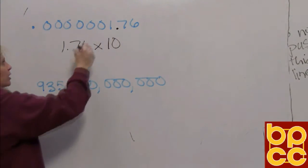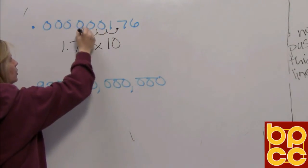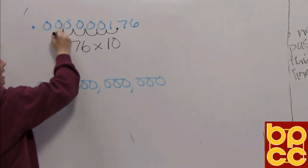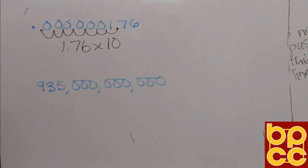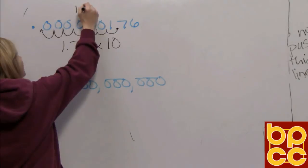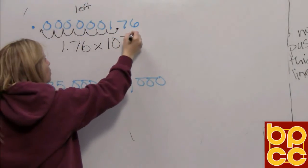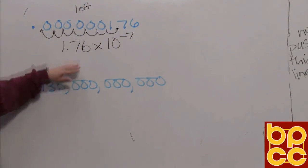So if we count, we moved it one, two, three, four, five, six, seven place values. But because we moved it to the left, that implies our exponent would be negative. And that's what that number one hundred seventy-six billions looks like in scientific notation.